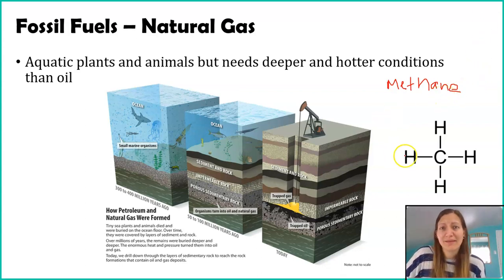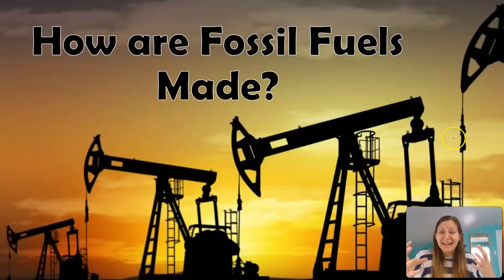And this is what the chemical formula of methane looks like. It is a single carbon and then these four hydrogens around it. So a much, much smaller molecule compared to our coal and our oil.